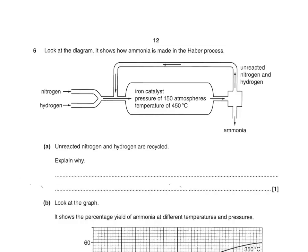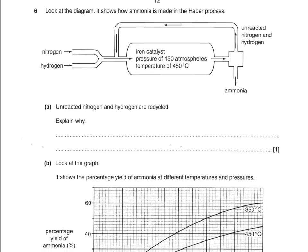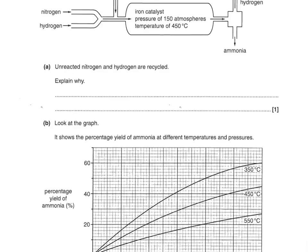Look at the diagram showing how ammonia is made in the Haber process. Unreacted nitrogen and hydrogen are recycled — explain why. It reduces costs, saves the starting materials, improves the percentage yield, increases sustainability, or ensures nothing is wasted. Any of those will get you that mark.